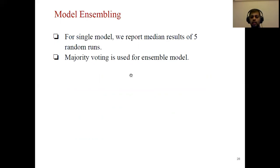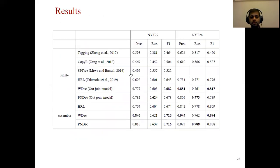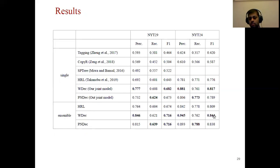We report the median of five runs and combine the five runs using majority voting to get an ensemble model. These are the main results: this column shows the single model and this column shows the ensemble model. Both word-level decoding and pointer network-based decoding outperform previous baselines. In the ensemble setting, we also compare with the HRL model, and our ensemble model outperforms it by a significant four percent margin.